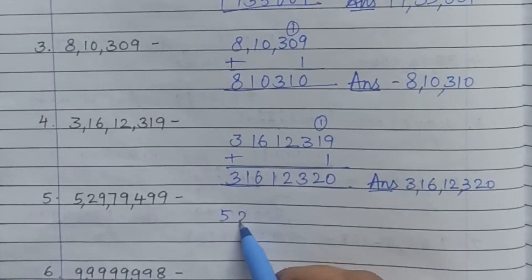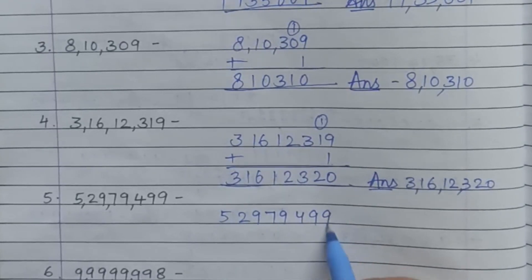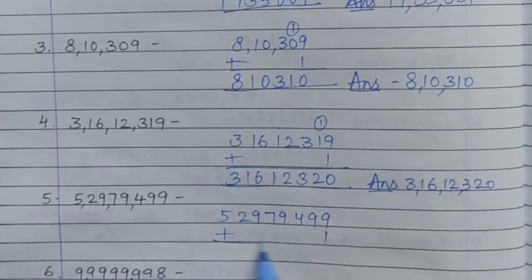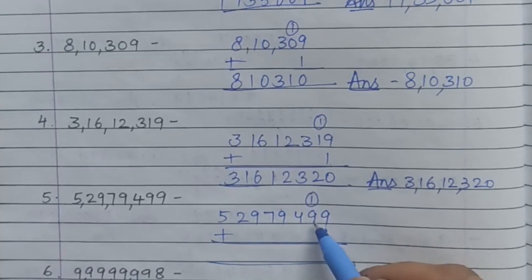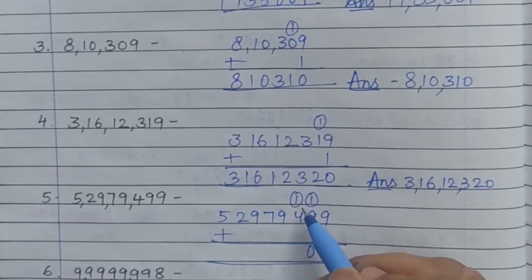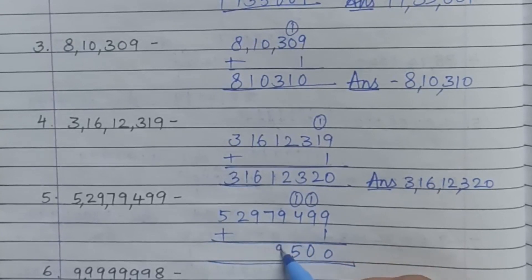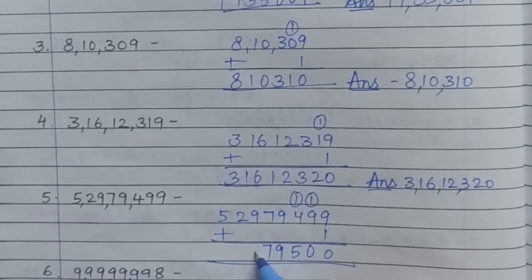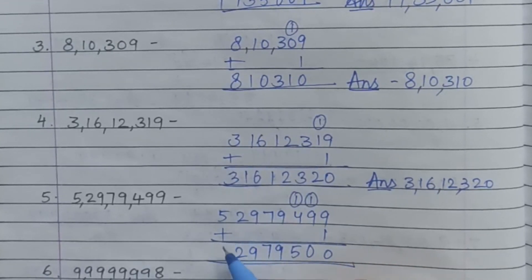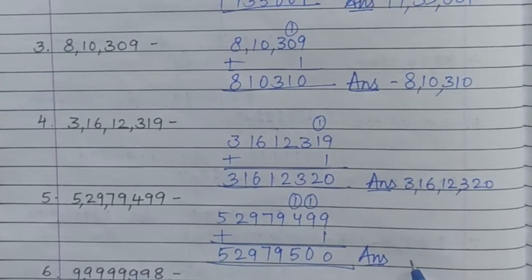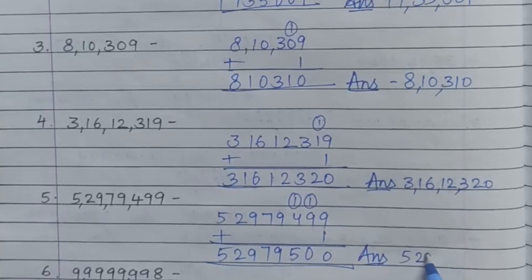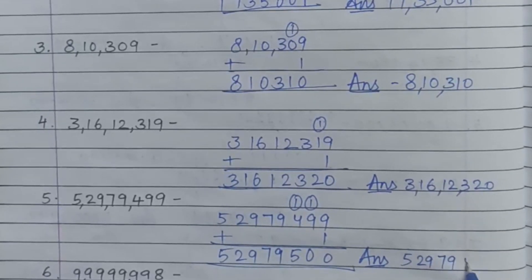Next question: 5,29,79,499. Add 1. 9 plus 1 is 10, carry 1. 1 plus 9 is 10, carry 1. 1 plus 7 is 8, which gives 9, 7, 9, 2, and 5. The answer is 5,29,79,500.